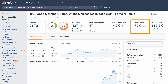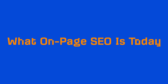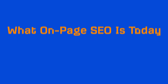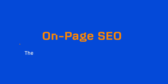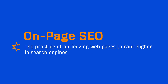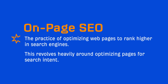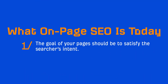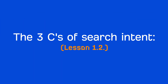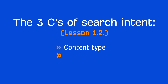Now let's talk about what on-page SEO is today in 2021 and beyond. Looking at the definition again: on-page SEO is the practice of optimizing web pages to rank higher in search engines. And as I mentioned, this revolves heavily around optimizing pages for search intent. The keyword here is search intent. The goal of your pages should be to satisfy the searcher's intent. We talked about the 3 C's of search intent, which should help you get the basic stuff down like the content type, format, and angle.